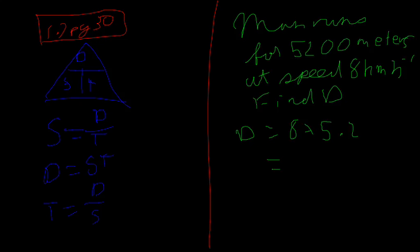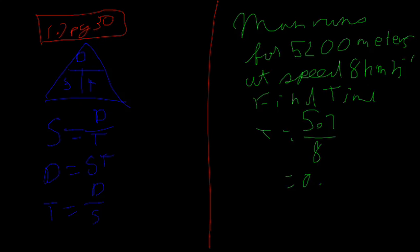So are we finding the time? Find the time. We already have the distance. So T equals D over S. And we know the distance, as we previously calculated, 5.2 kilometers over the speed which is 8, which is 0.65 hours.